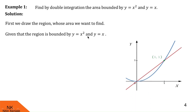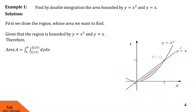y = x² is a parabola along the y-axis opening upwards. And y = x is the straight line passing through the origin and making an angle of 45 degrees with the positive x-axis. So the area bounded by these two curves is this region. Now let us find out the area using the formula: double integral of dy dx from f1(x) to f2(x) and a to b.